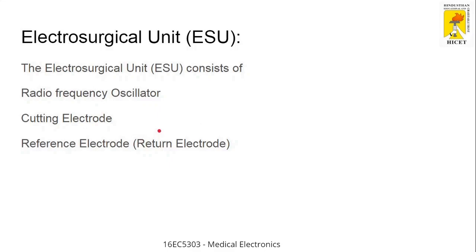The reference electrode is the return electrode. In electronics, you always have two potentials — a lower potential and a higher potential — and both are important to complete the circuit. Just as a light has a positive terminal and a negative terminal, current flows from higher potential to lower potential. Similarly, for heat to effectively cut tissue, it must flow from higher potential to lower potential, and that is why a reference electrode is needed.